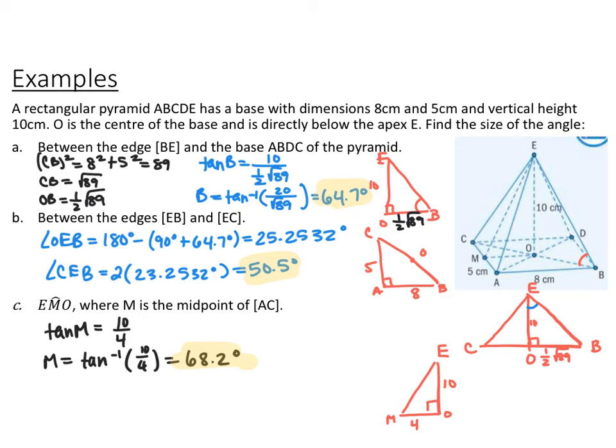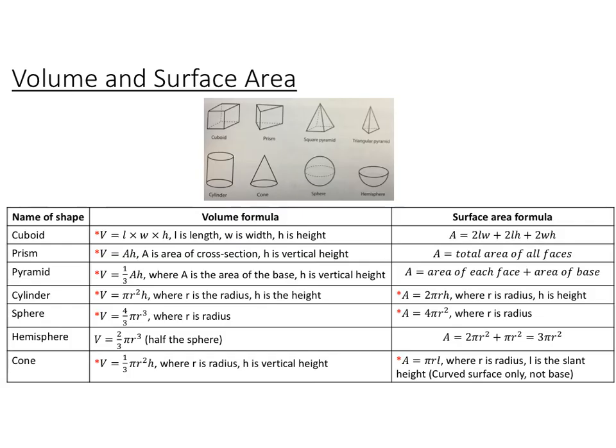When doing problems like this, look at the different triangles and identify what information you know. It's especially useful when they're right triangles, so you can apply the Pythagorean theorem or SOHCAHTOA. Here are all the volume and surface area formulas — anything with a red asterisk is in your formula booklet. Pause the video and write down these formulas.